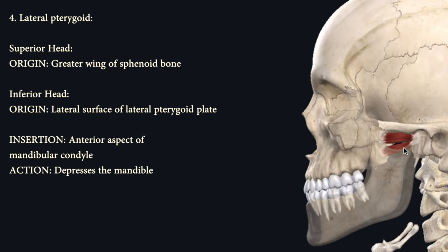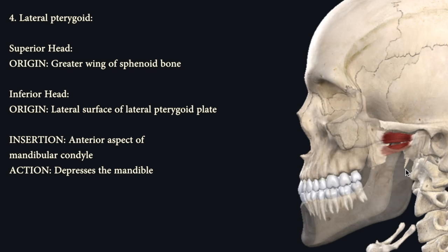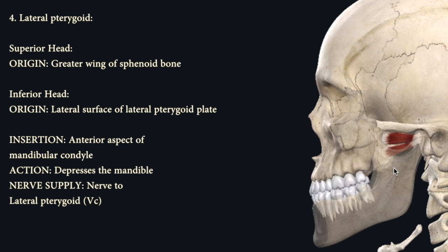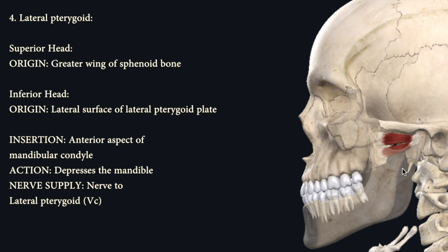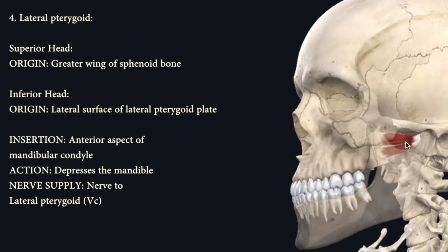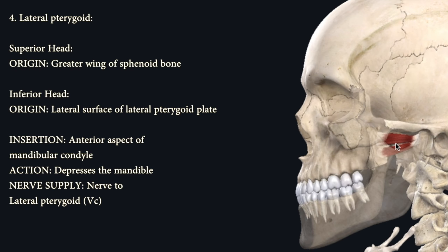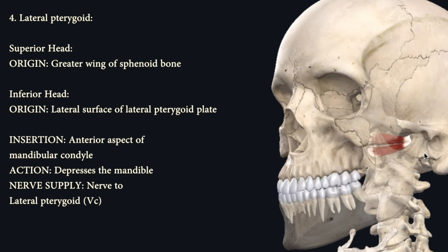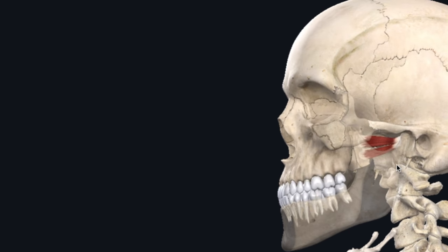This is the only muscle that helps depress the mandible, so opening of the jaw. Its nerve supply comes from the nerve to lateral pterygoid, which comes from the anterior division of the mandibular nerve. Regarding the inferior head, I always remember its origin being from the lateral surface of the lateral pterygoid plate — lateral pterygoid originating from the lateral surface of the lateral pterygoid, so lateral cubed.